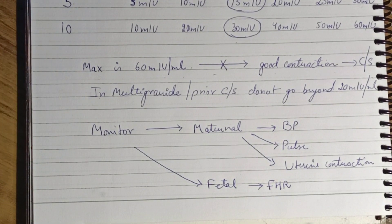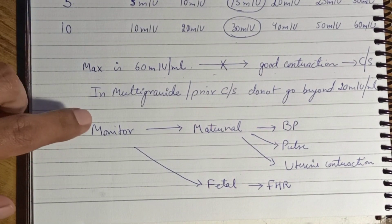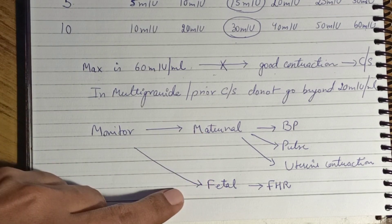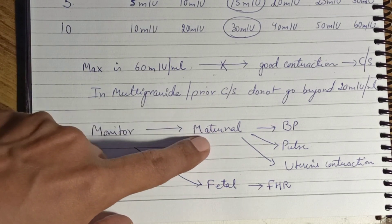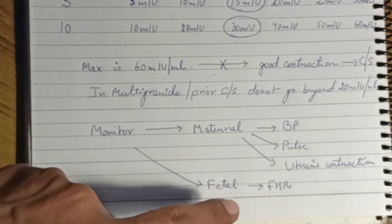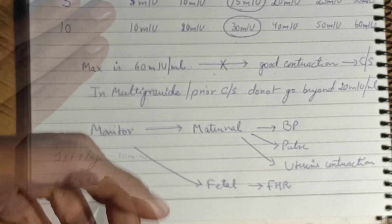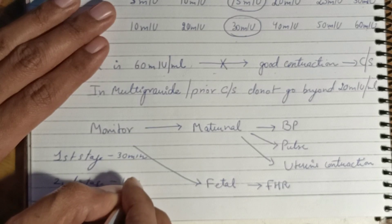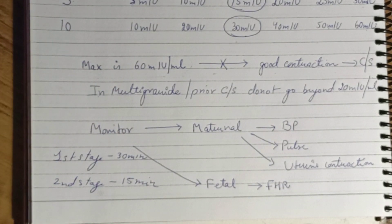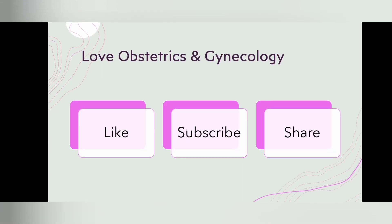Monitoring of the patient on induction is very important. You measure maternal blood pressure, pulse, and uterine contractions, and for the fetus, fetal heart rate. In the first stage of labor, monitoring should be done every 30 minutes, and in the second stage, every 15 minutes. If you liked this video, please like, subscribe, and share the channel Love Obstetrics and Gynecology. Thank you.